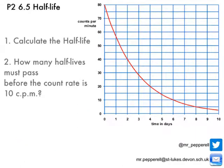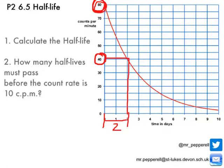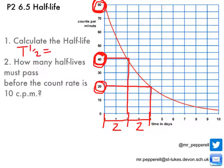Now I want to test your understanding. I've got another half-life graph, and I want you to calculate the half-life from this graph, then tell me how many half-lives must pass before the count rate drops down to 10 counts per minute. Pause the video, look at the graph, do your workings out, then restart. We're starting off with a count rate of 80. I need to find how long it takes for that to halve to 40 — it took two days. Double-checking with another halving from 40 down to 20: started at the second day, went to the fourth day — that's two days again. So the half-life is two days.